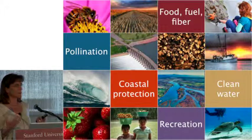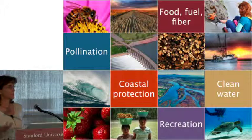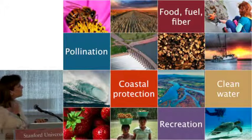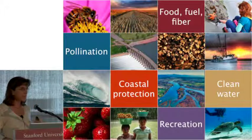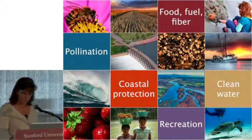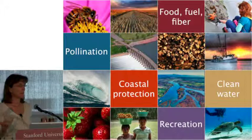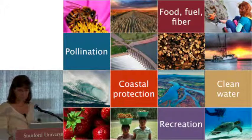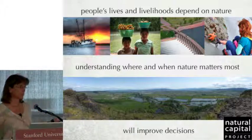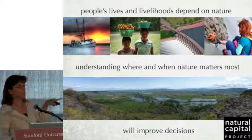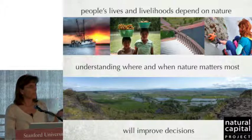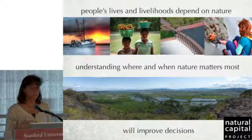At the heart of all our work is the concept of natural capital. In the academic literature we call them ecosystem services — simply the benefits that people get from nature. These can be material benefits like food, fiber, fuel, clean water, and protection from coastal hazards. They can also be spiritual, aesthetic, and recreational benefits, as well as services such as pollination. Benefits from nature is the common element in all the spatial modeling we do, grounded in the simple premise that people's lives and livelihoods depend on nature, and that understanding when and where nature matters most to people will transform decisions.